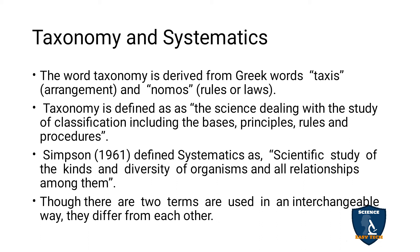Simpson in 1961 defined systematics as the scientific study of the kinds and diversity of organisms and all relationships among themselves. So systematics is a kind of study in science which shows the diversity and relationships among organisms. These two terms are used in an interchangeable way, though they differ from each other.